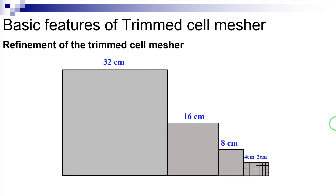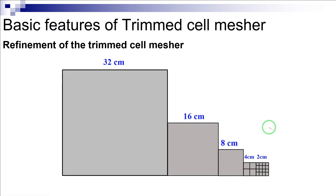Therefore, the trim cell mesher can only refine cells by splitting the edges of the original cell in half. Thus, the volumetric control refines the cells to the next lowest allowable cell size. For instance, let's assume that the core mesh cell size is 8 centimeters. Then the cells within the mesh can only be split to sizes of 4, 2, and 1 centimeters. So if you specify a cell size of 3 centimeters, you would actually get a cell size of 2 centimeters within the mesh.